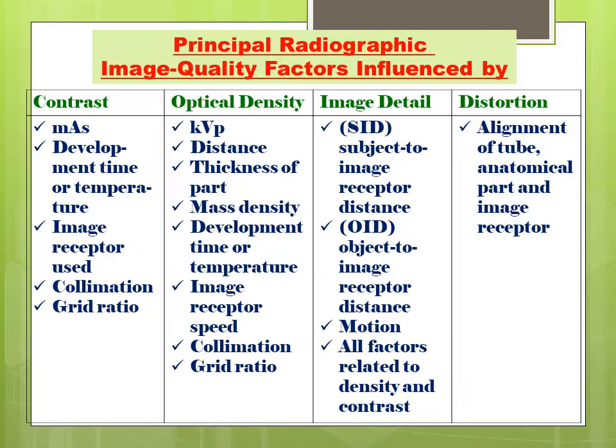Optical density is influenced by KVP (kilovolt peak), distance, thickness of part, mass density, development time or temperature, image receptor speed, collimation, and grid ratio.